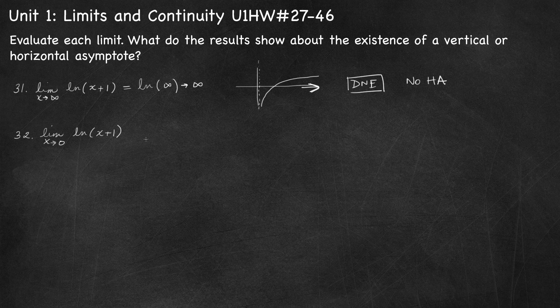Number 32, find the limit as x approaches 0 of the natural log of x plus 1. Using substitution: natural log of 0 plus 1 is natural log of 1, which equals 0. That's a finite value, so the limit is 0. Since I took the limit as x approached a finite value and got a finite value, this tells me nothing about vertical or horizontal asymptotes — at most I can say there is no vertical asymptote at x equals 0.